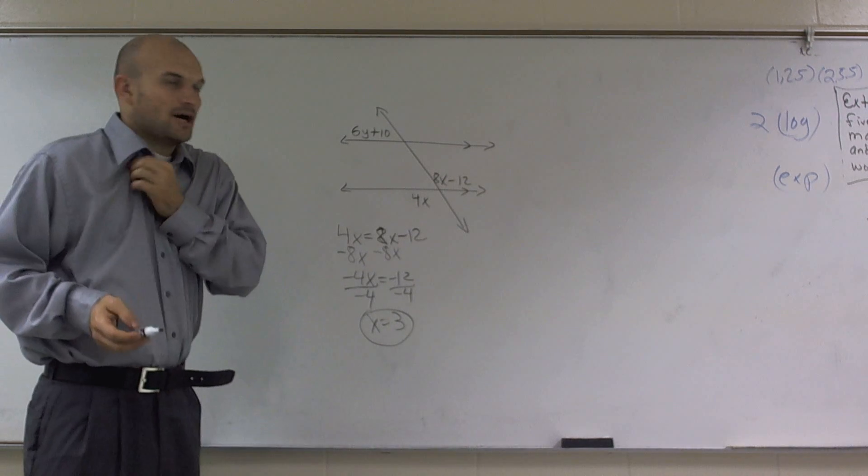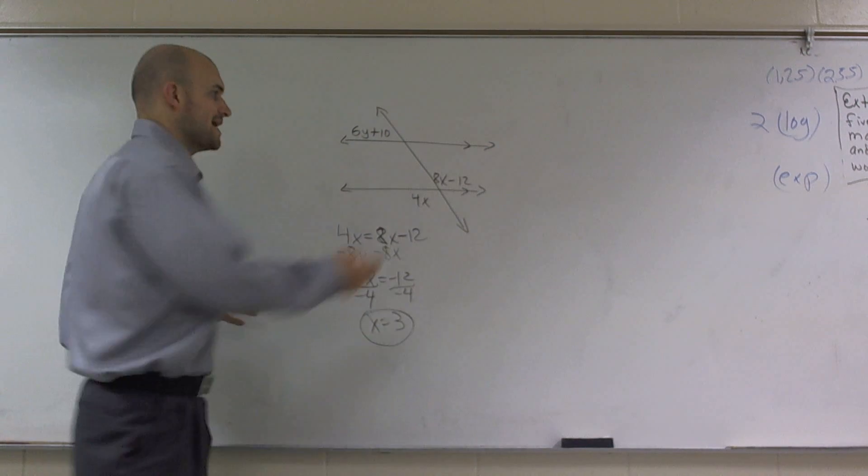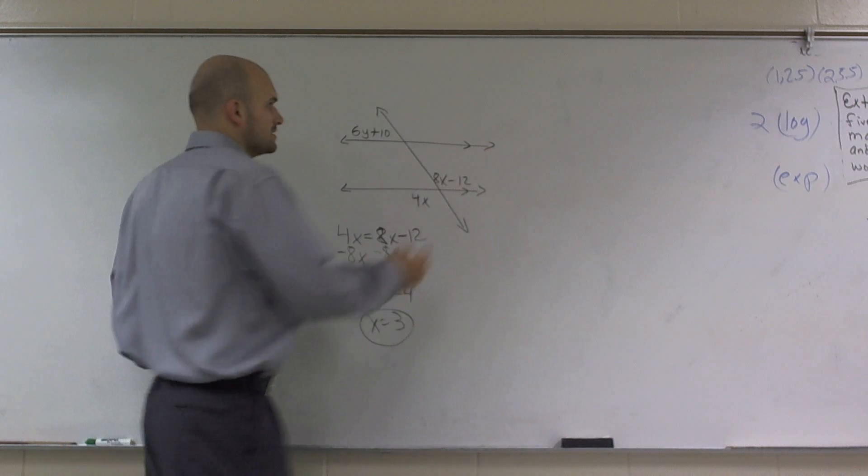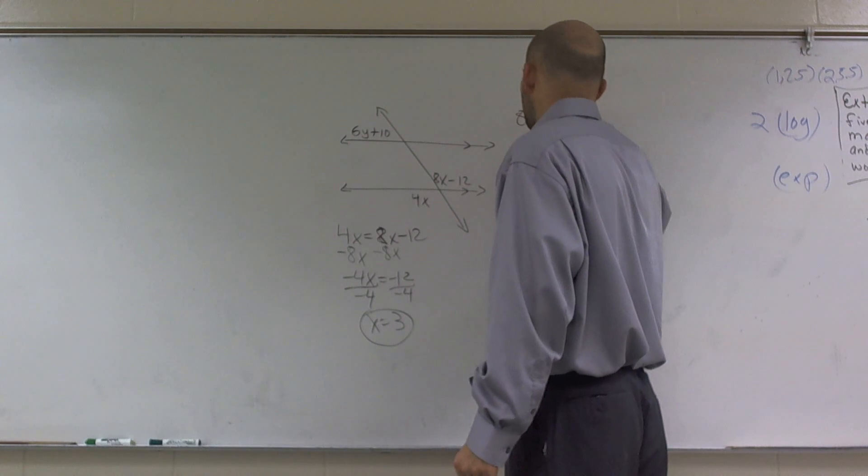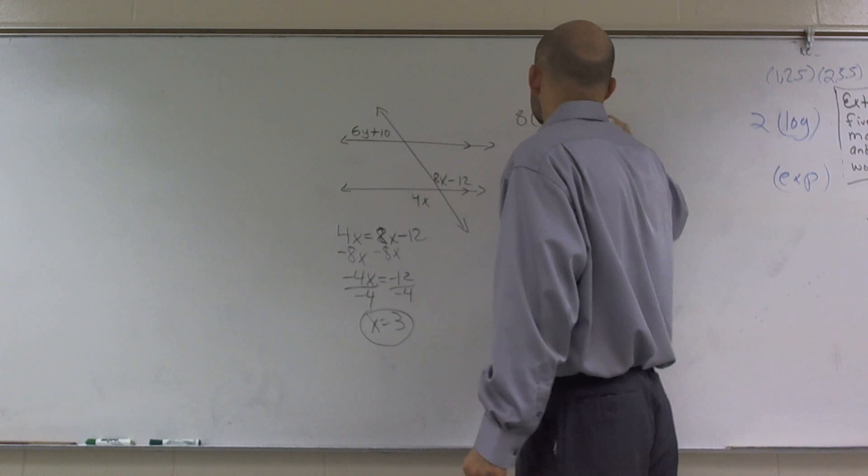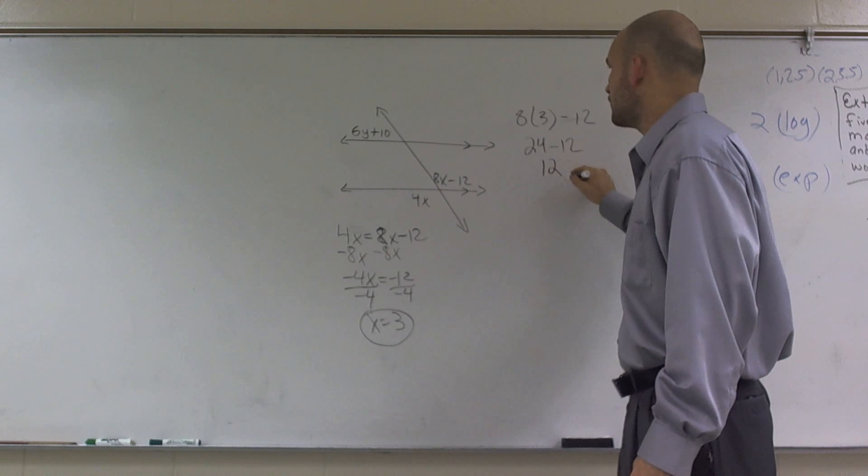So now, how is that going to help me? Well, if you notice, in this problem, I have y and an x. So since I've now solved x, I can figure out, what is the value of this angle right here? So I do 8 times 3 minus 12. 8 times 3 is 24. Minus 12 equals 12.